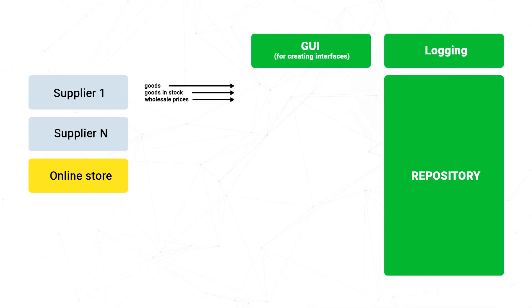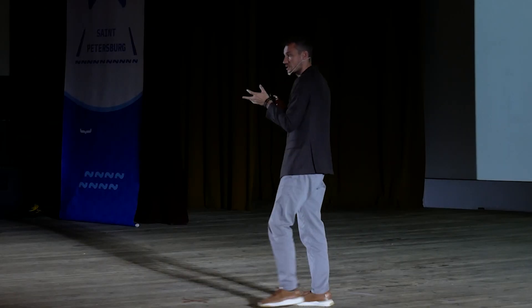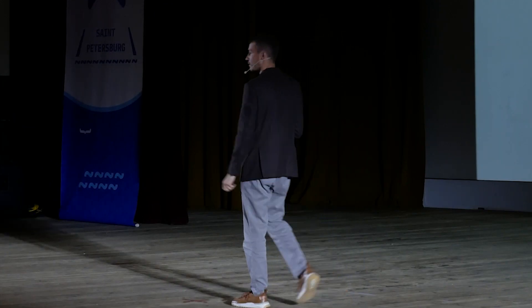We need some logging and a certain way to do integrations. All of this, marked in green here, is the responsibility area of an ESB. We must have a different interface for each supplier. If we need an API because 10 suppliers want to contact us through an API, that's an interface. If some supplier wants to send files via email, that's also an interface. And if someone wants to work through an online account, that's another interface in the repository.